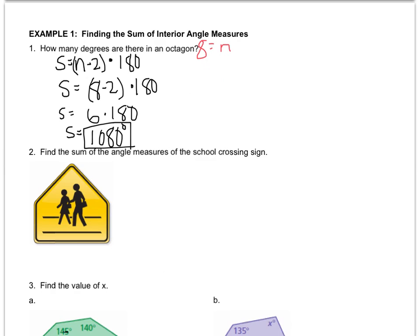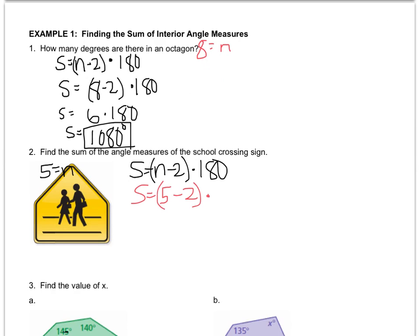If you want to try example 2 on your own, go for it. First thing you want to do is write down the formula, and this shape has 5 sides. So N equals 5 — now we plug it in, and writing down your work as you go through it, you get 540 degrees.